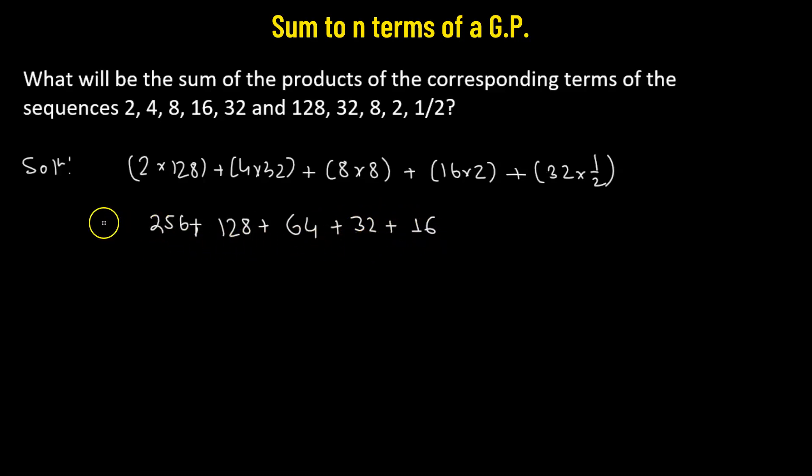We need to find out the sum. So let's call it S5 because we have 5 terms here. We will use the formula for finding out the sum, which is given by Sn equals to A times 1 minus R raised to the power of N divided by 1 minus R.